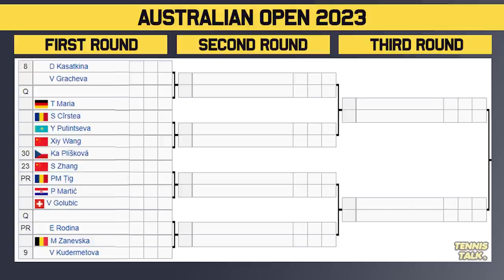Top of the bottom half: the 8th seed Kasatkina takes on Gracheva in the first round. Pliskova, the 30th seed, is also in this section. The 23rd seed Shuai Zhang takes on Teague. Then Kudermetova, the 9th seed, could meet Kasatkina in the fourth round. The Russians have a good draw in this section — it's a very nice draw for both Kasatkina and Kudermetova.